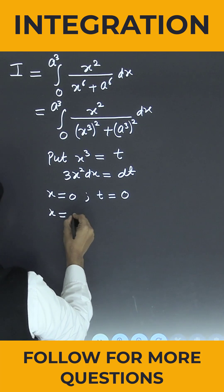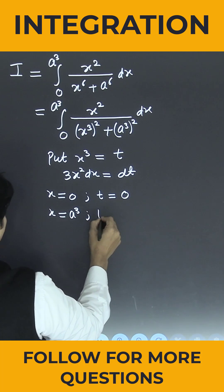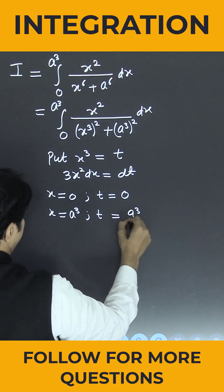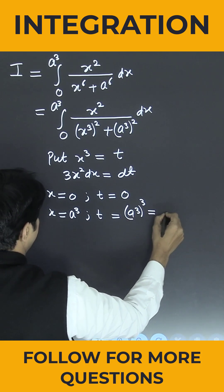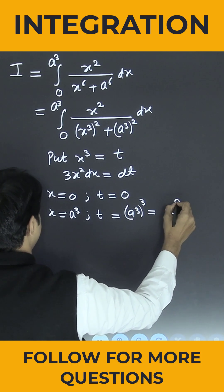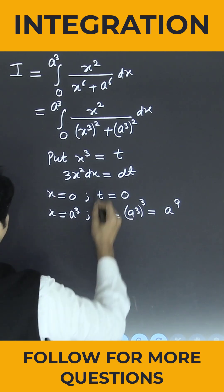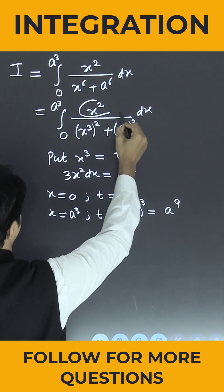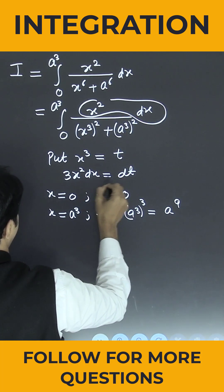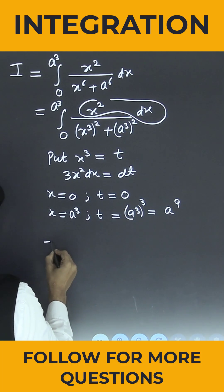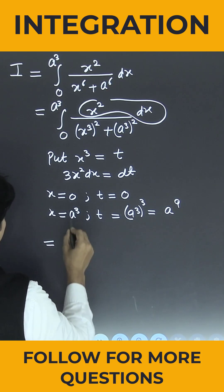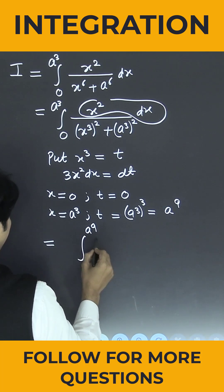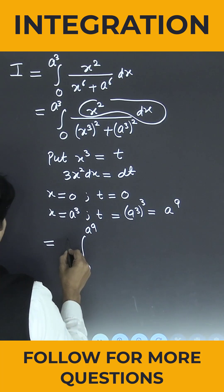When x is equal to a³, what is the value of small t? This is (a³)³, which is nothing but a⁹. And x² dx is nothing but dt/3. So the limits of integration become from t = 0 to a⁹, and 1/3 will be outside.